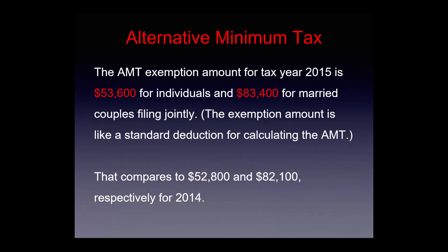The AMT exemption amount for tax year 2015 is $53,600 for individuals and $83,400 for married couples filing jointly. The exemption amount acts like a standard deduction when calculating the AMT, compared to $52,800 and $82,100 respectively for 2014.